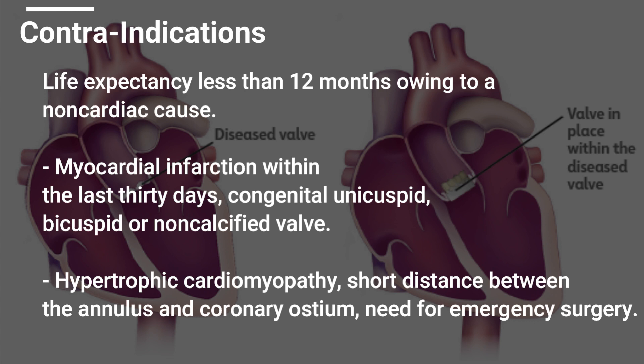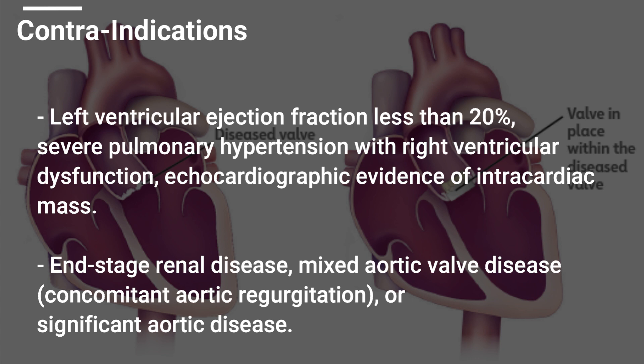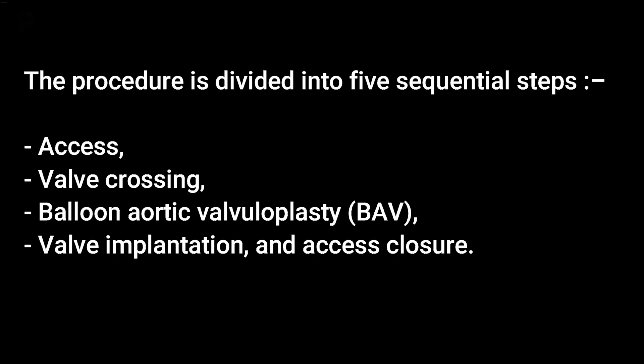Contraindications for TAVI include: life expectancy less than 12 months owing to a non-cardiac cause; myocardial infarction within the last 30 days; congenital unicuspid, bicuspid, or non-calcified valve; hypertrophic cardiomyopathy; short distance between the annulus and coronary ostium; need for emergency surgery; left ventricular ejection fraction less than 20%; severe pulmonary hypertension with right ventricular dysfunction; echocardiographic evidence of intracardiac mass; end-stage renal disease; mixed aortic valve disease; concomitant aortic regurgitation; or significant aortic disease.